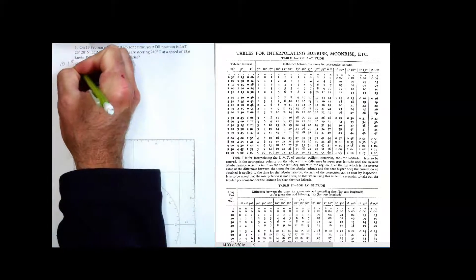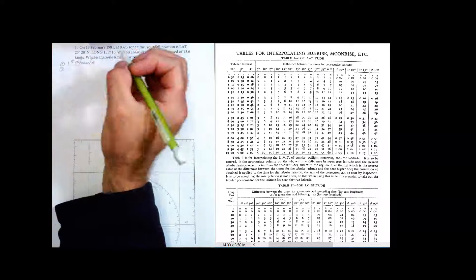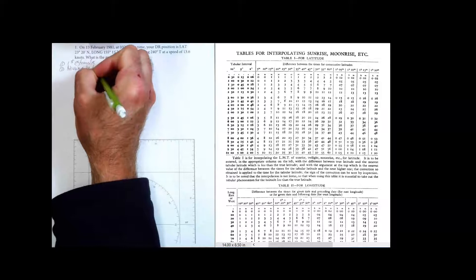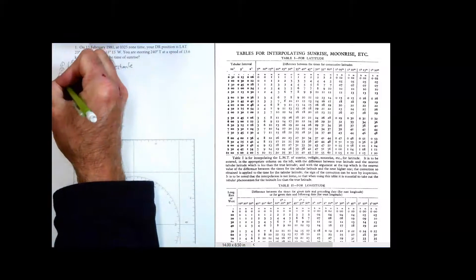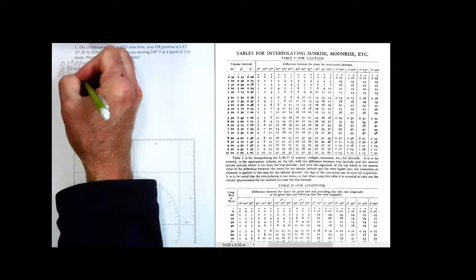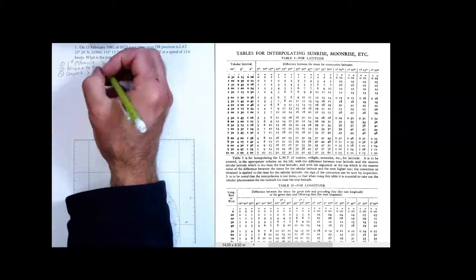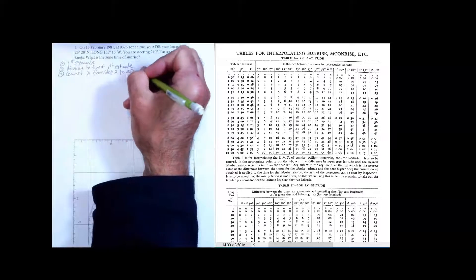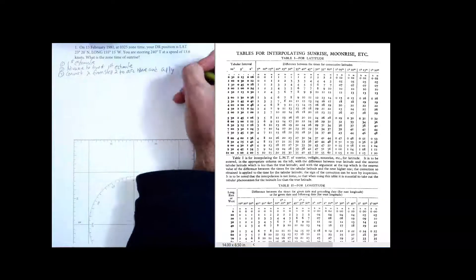First we're going to do what's called the first estimate. Then what we're going to do is we're going to advance to the time of the first estimate. And then the third thing we're going to do is we're going to convert the longitude from our advanced position, convert the longitude from step two, arc to time, and apply that to the first estimate from step one.